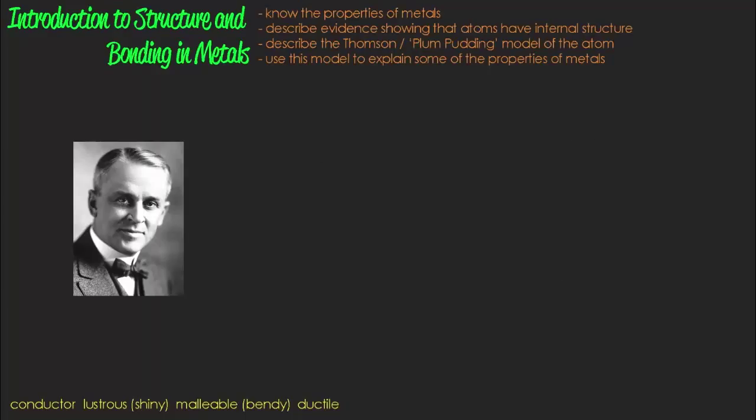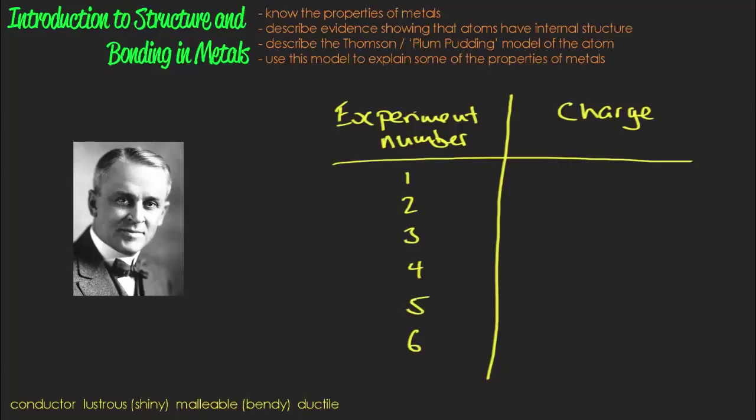Now let's look at an imaginary set of results for the charge on these droplets. Maybe we have something like the table that we see here. What do you notice? All of these numbers are multiples of two. And there aren't any smaller numbers than two. This must mean that the droplets are gaining and losing charge in lump pieces. And those lump pieces must be the electrons.